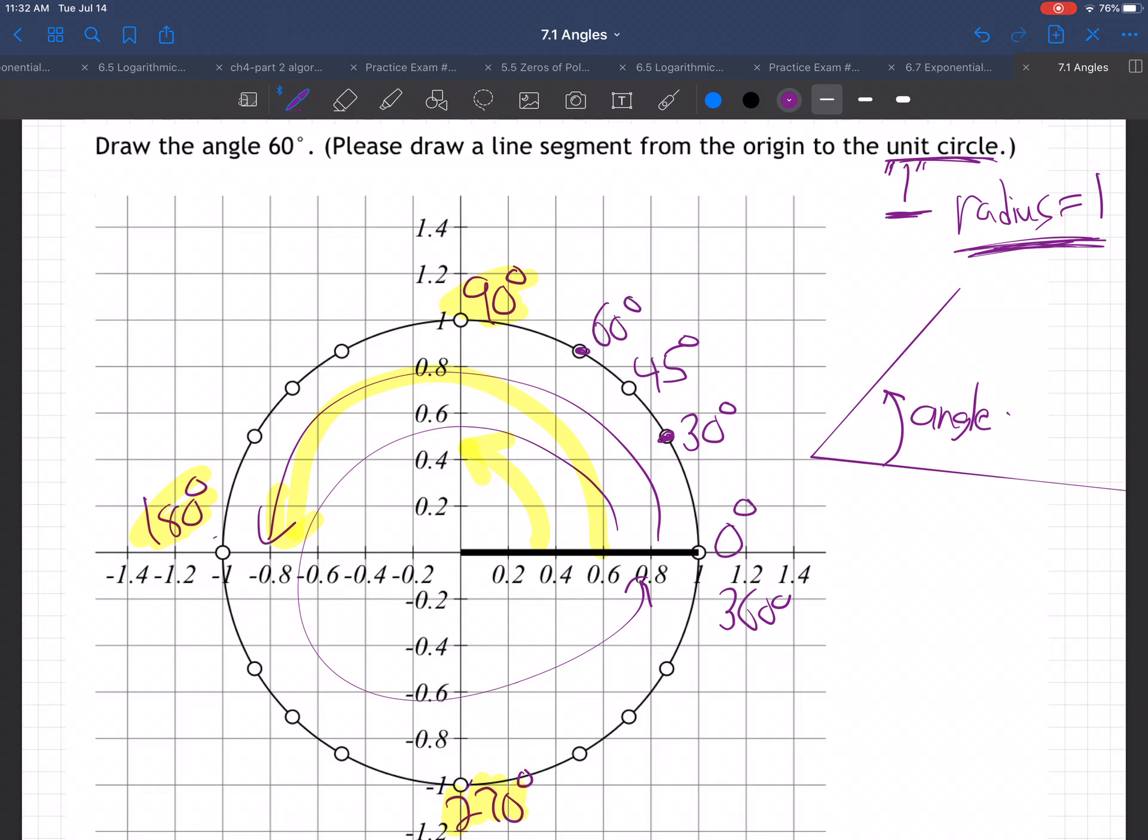This is zero, where it starts off. It's also 360. Zero and 360 are the same angle, because 360 is all the way around and zero is no way around. Either way, it's right here.